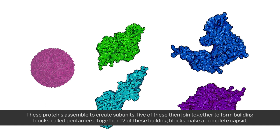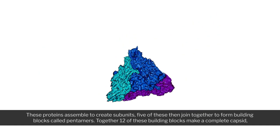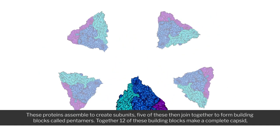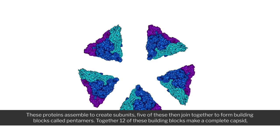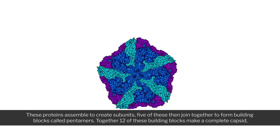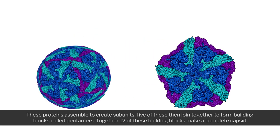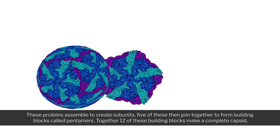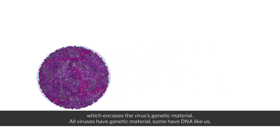These proteins assemble to create subunits. Five of these then join together to form building blocks called pentamers. Together, 12 of these building blocks make a complete capsid, which encases the virus's genetic material.